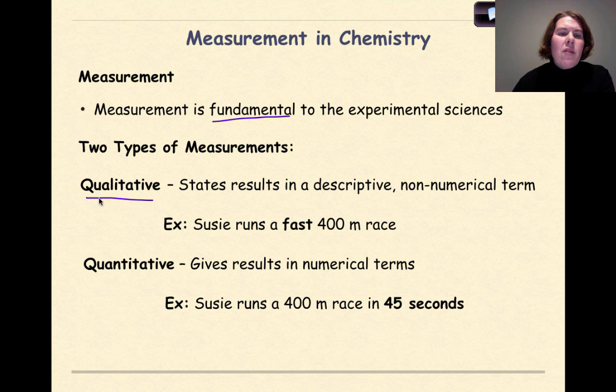One is a qualitative measurement, something that states the results in terms of like a descriptive or non-numerical term. For example, Susie runs a fast 400-meter race. We compare that to a quantitative measurement, and if you look at the base word of quantitative, we see quantity or a number.